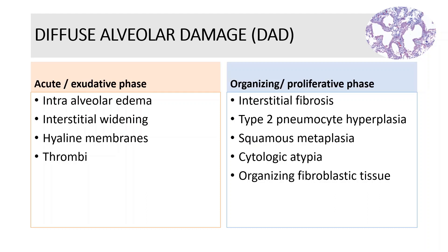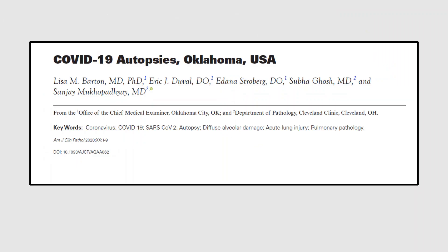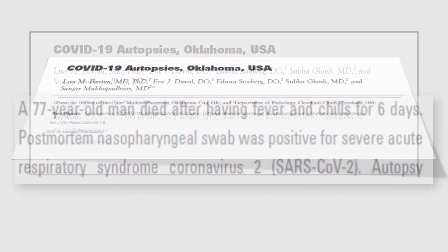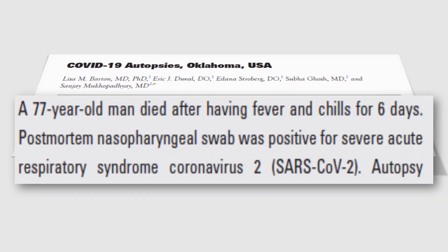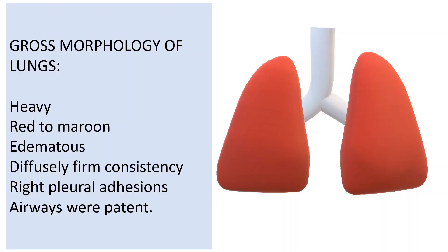With this understanding of the pulmonary pathology of ARDS, we shall review the data on the histologic findings in COVID. This is the first paper that enumerates the findings of two complete autopsies in COVID-positive individuals who died in the United States in March 2020. The first case is that of a 77-year-old man who died after having fever and chills for 6 days. His nasopharyngeal swab was tested positive for SARS-CoV-2. The main findings related to COVID in this case were limited to the respiratory system. The bilateral lungs were heavy, red to maroon in color, edematous with a diffusely firm consistency. There were right pleural effusions. The airways were patent with no evidence of mucus plugging.